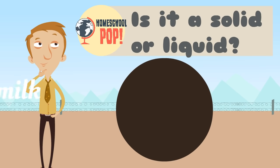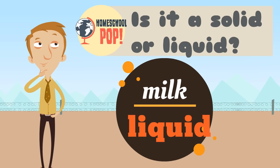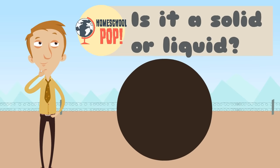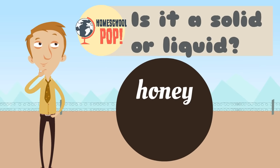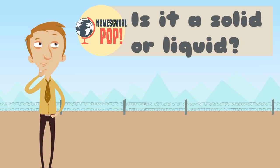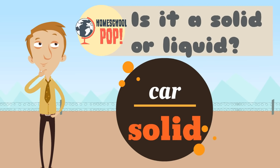Let's try milk. Is milk a liquid or solid? Milk is a liquid — it takes the shape of its container. How about honey? Is honey a liquid or a solid? It's a liquid — it takes the shape of its container. Let's try a car. Is a car a solid or a liquid? It's a solid — it has its own shape.